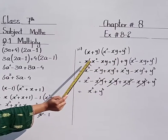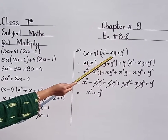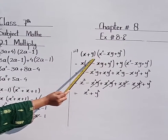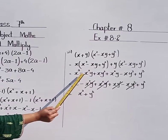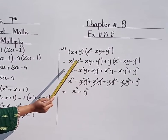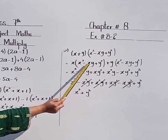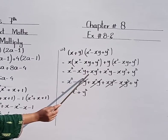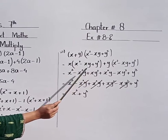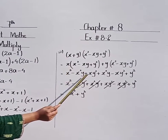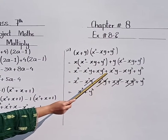The third part is (x + y) into (x squared - xy + y squared). First multiply x by the second algebraic expression. x into x squared is x cubed, minus x into xy gives x squared y, and x multiplied by y squared — x is single and y squared remains the same, giving x y squared.